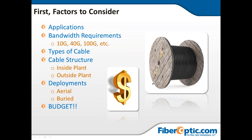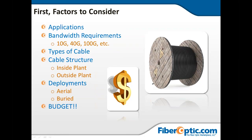Types of cable — indoor, outdoor, direct burial, aerial — there's a whole bunch of them, and we'll touch on each. Cable structure: where is it going to be? Inside plant or outside plant — those are really the two areas. If it's outside, is it going to be aerial or buried? There's direct burial cable, conduit options, and of course budget always comes into play. The main thing is you want to select your fiber once and install it once — you don't want to have to pull it out and put it in again.